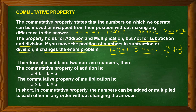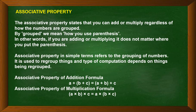For two non-zero numbers a and b, the commutative property of addition says a plus b equals b plus a, and the commutative property of multiplication says a into b equals b into a. In short, numbers can be added or multiplied in any order without changing the answer.